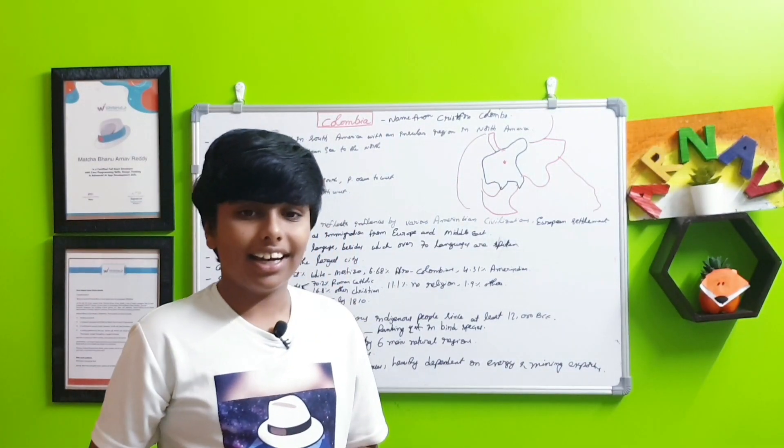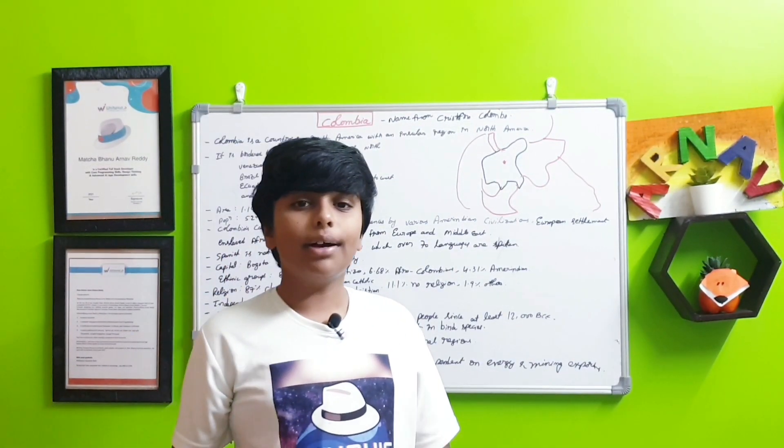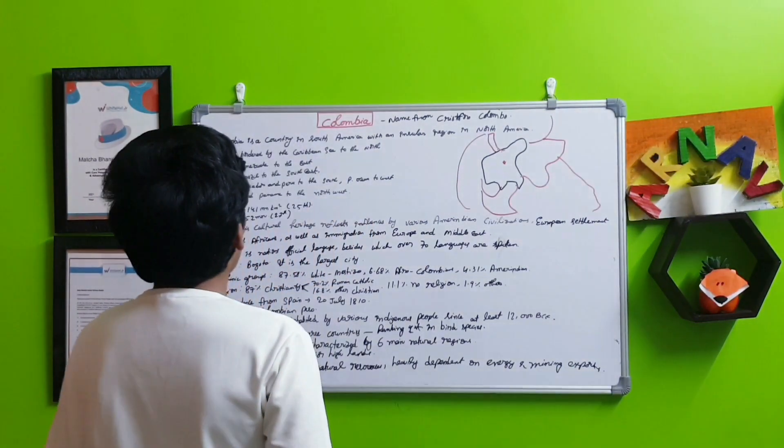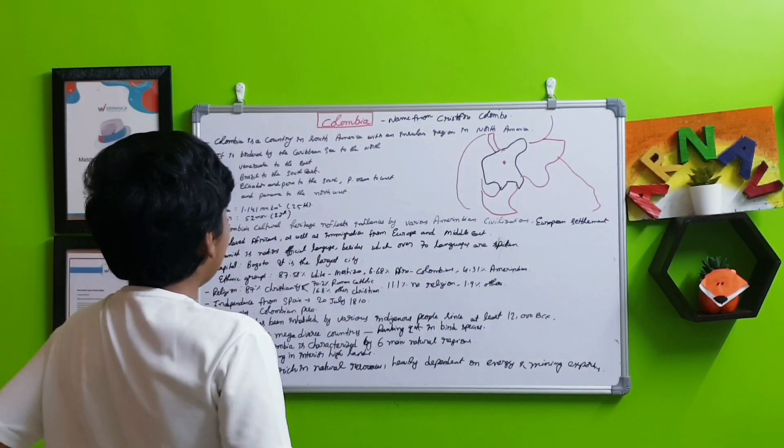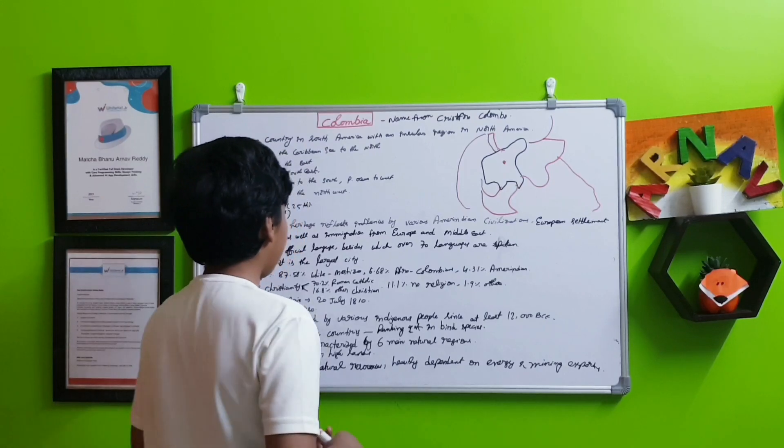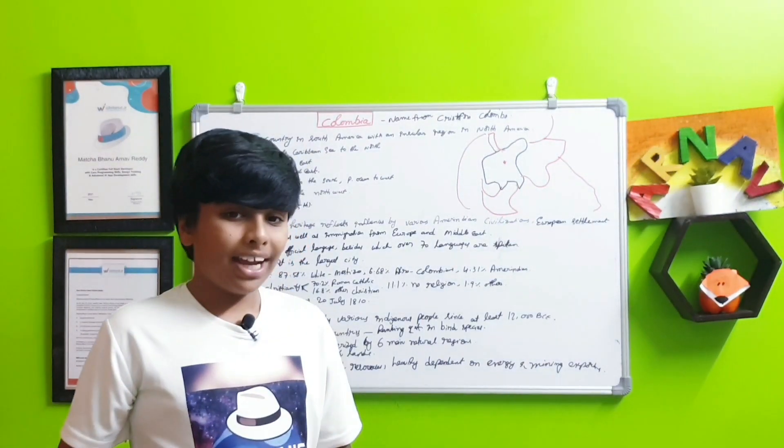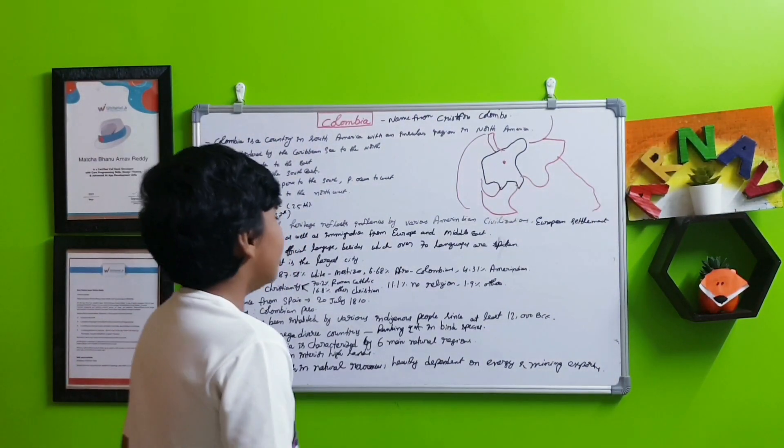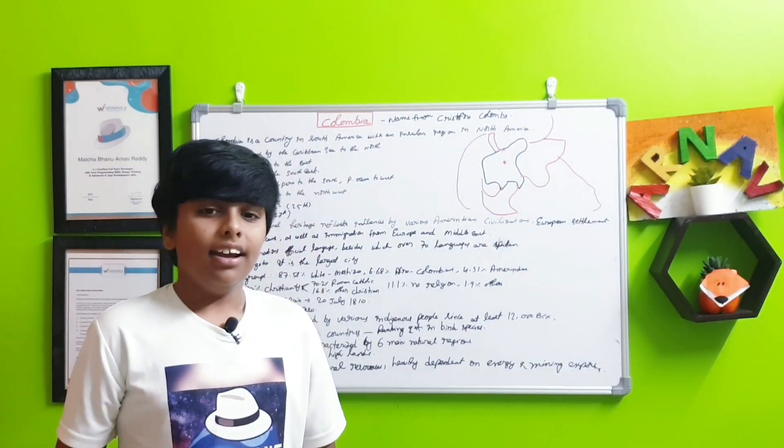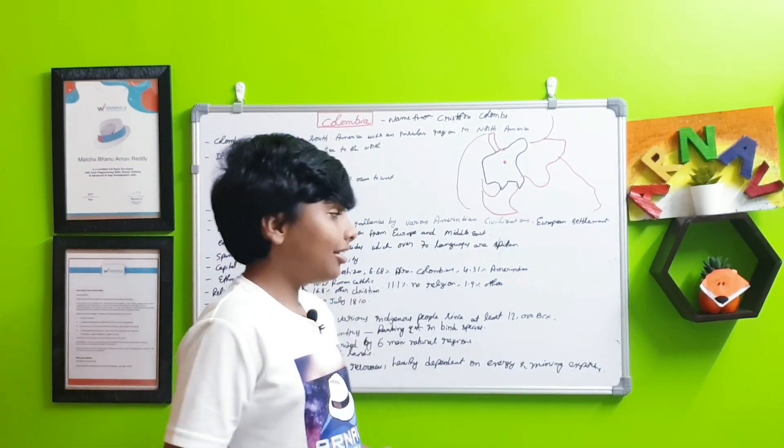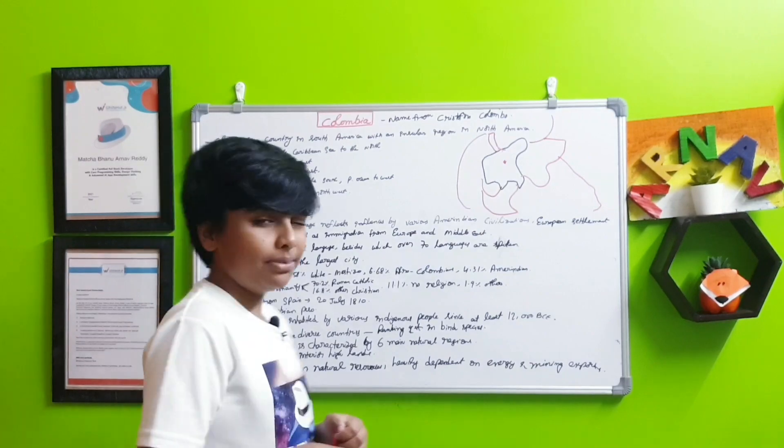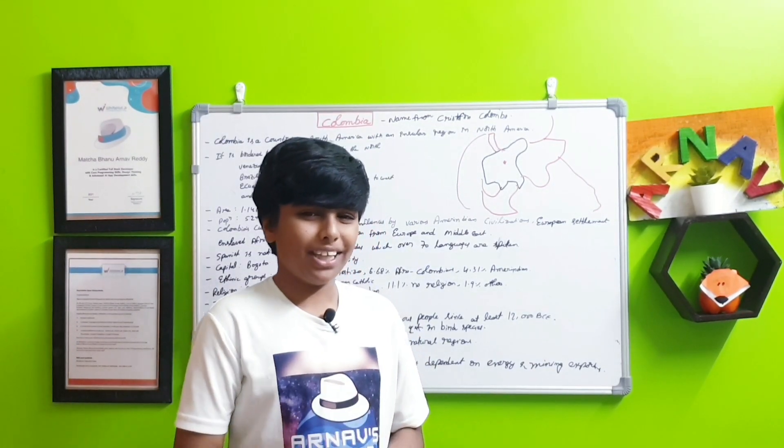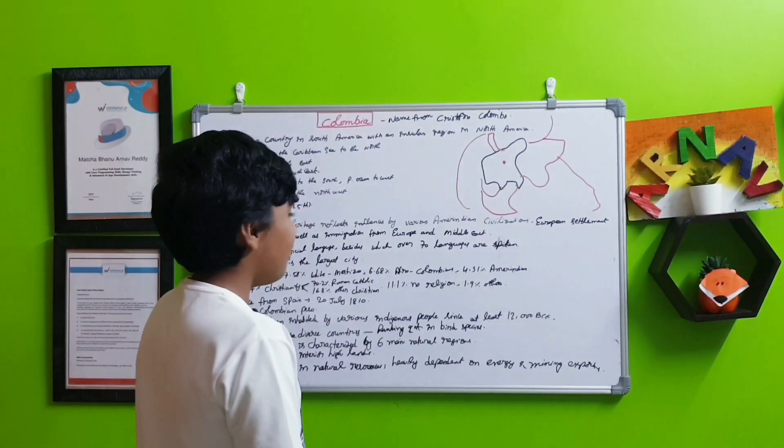Next, ethnic groups: 87.58% are white mestizo populations, 6.68% are Afro-Colombians (a mix between Africans and Colombians), and 4.31% are Amerindian populations, mostly native populations.